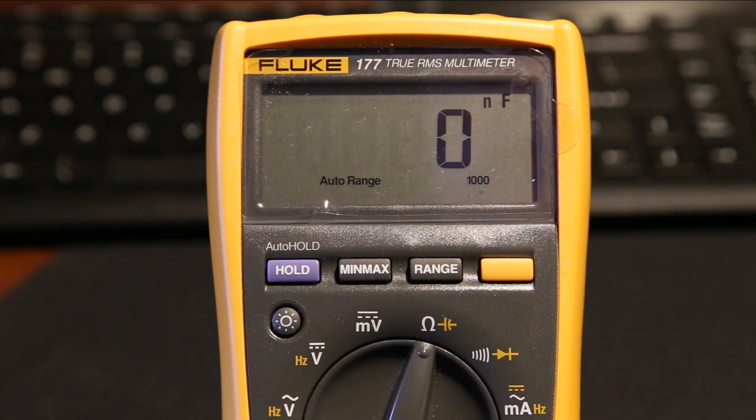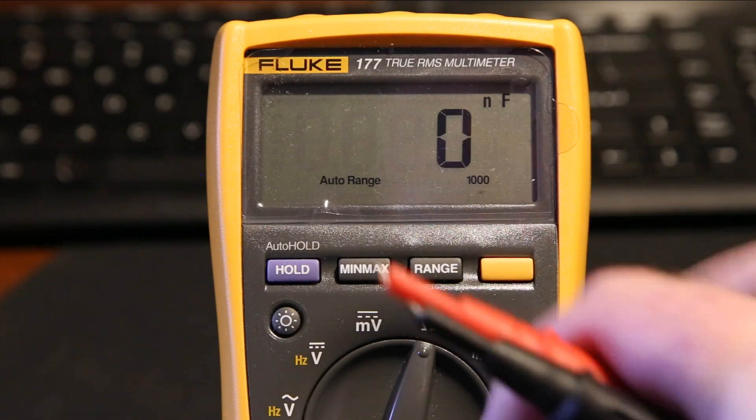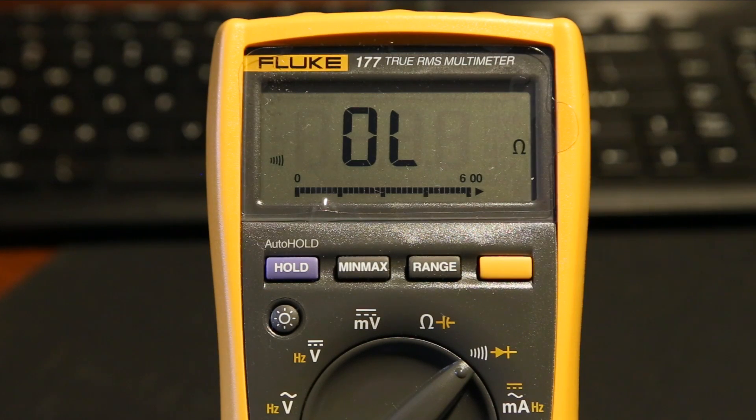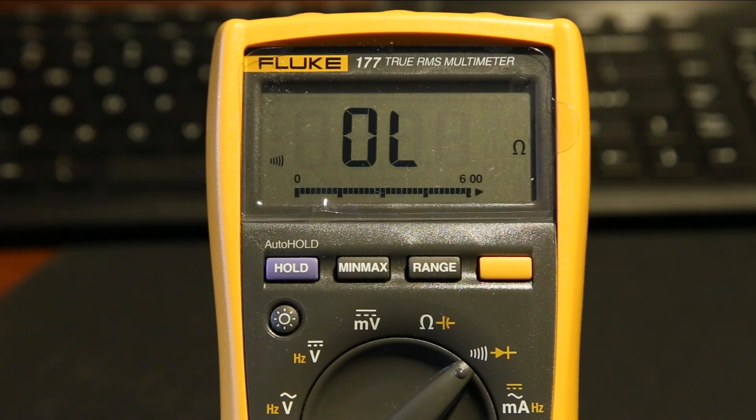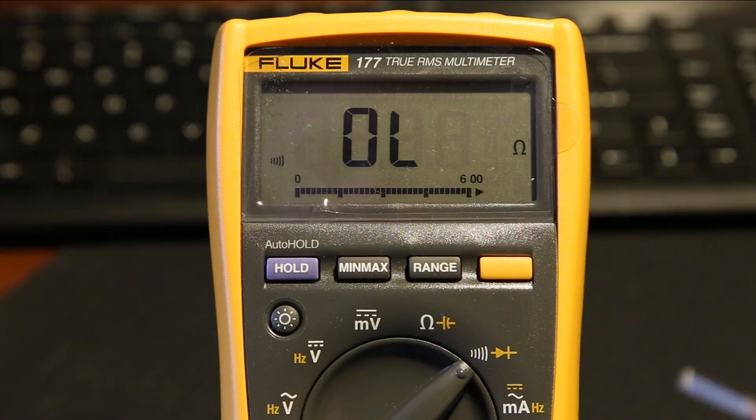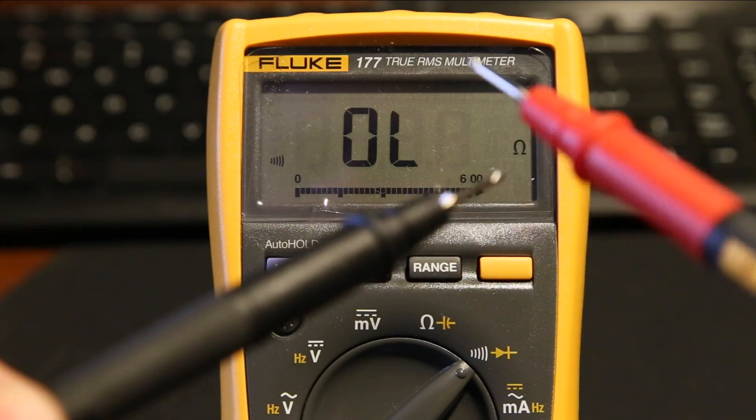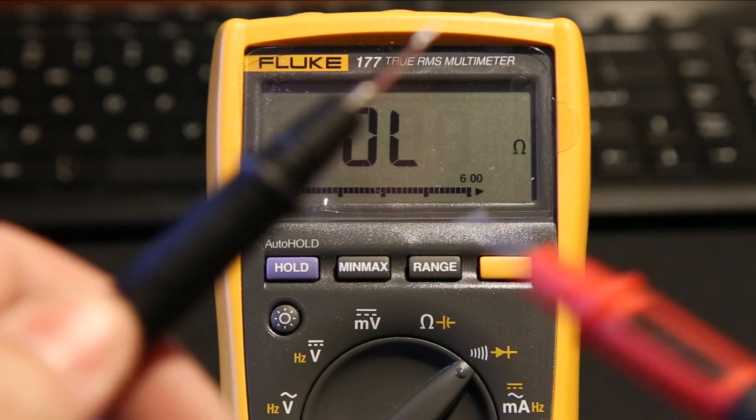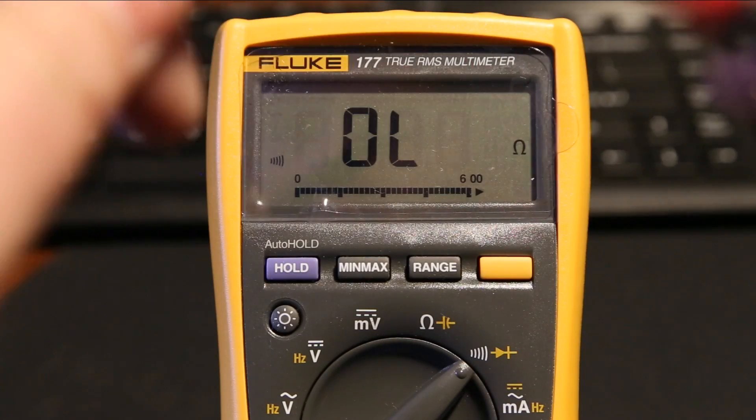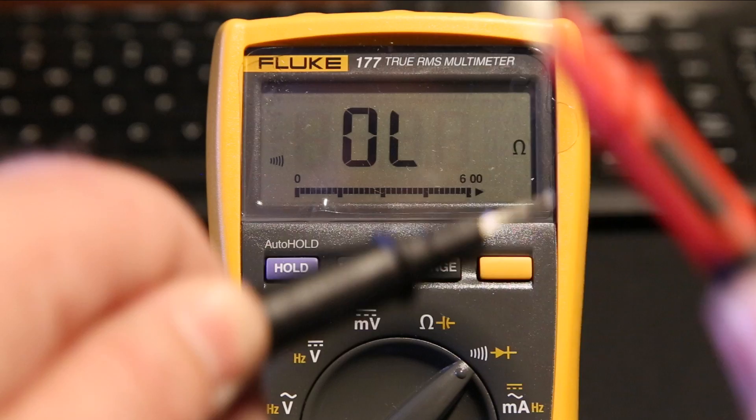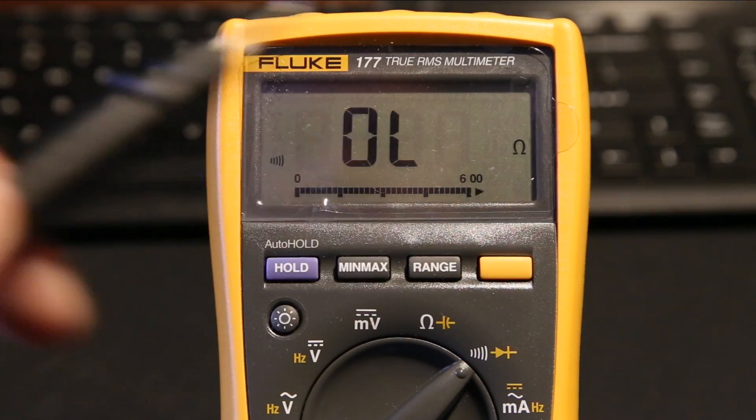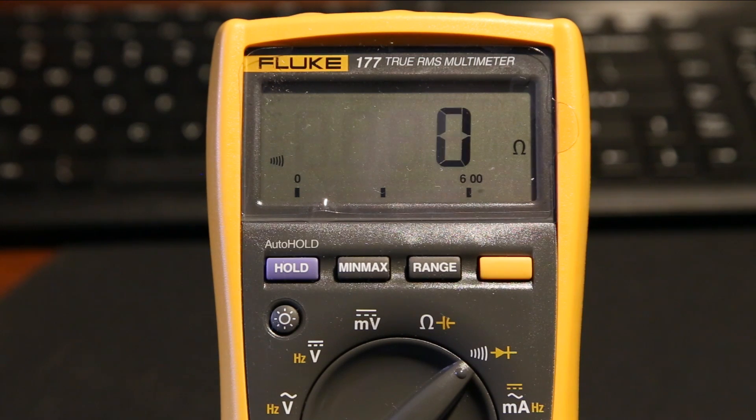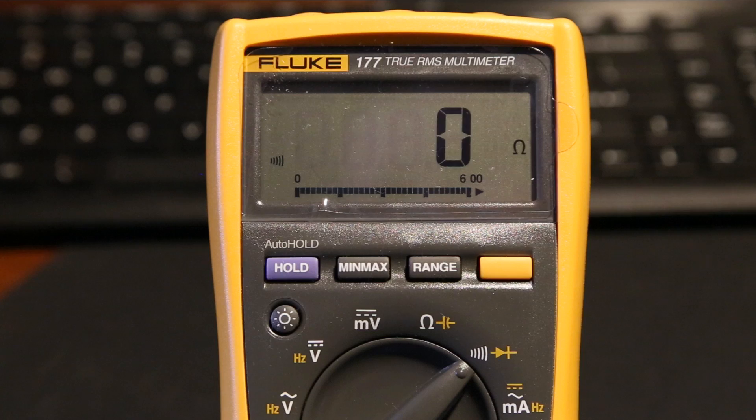What else can we have a look at over here? I think I'm going to check out the continuity. Let's have a look at the continuity. On continuity, let's see how fast this bagger is. We've got our two probes. As you can see, continuity is very fast, very efficient, works extremely well. I'm very happy with that.